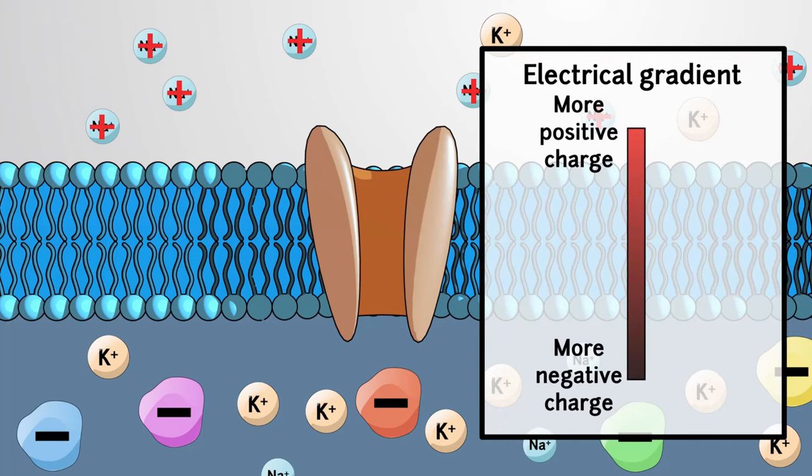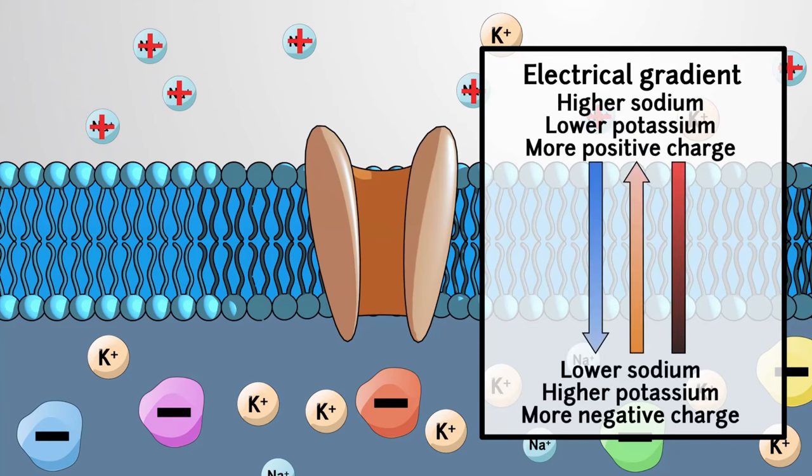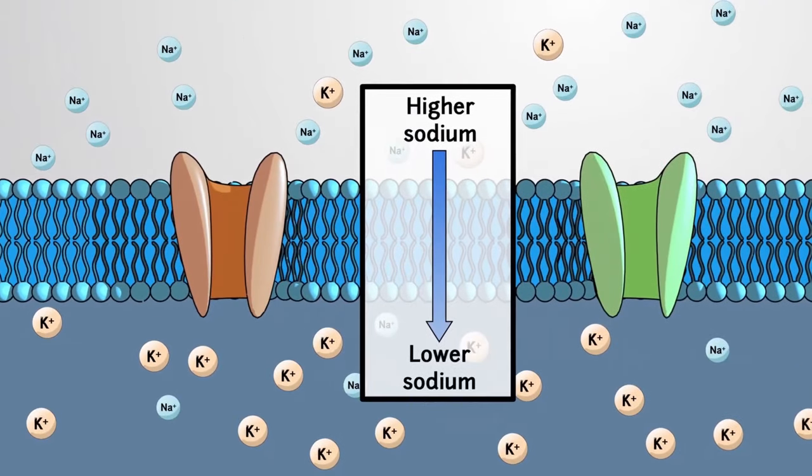Active transport uses energy to maintain the electrochemical gradient across the cell membrane, with specialized membrane proteins moving ions against their electrochemical gradients. Under specific conditions, however, the ions are allowed to move with their gradients, generating energy for processes like glucose transport.